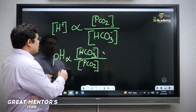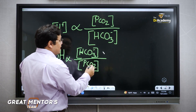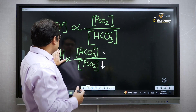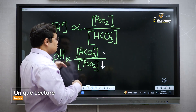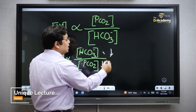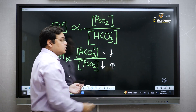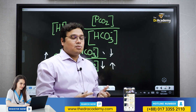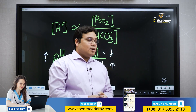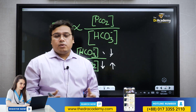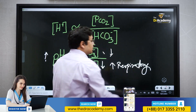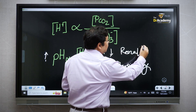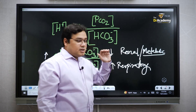In short, pH is proportionate to bicarbonate levels — whenever bicarbonate increases, pH increases; and whenever partial CO2 decreases, pH increases. To make pH go down, either bicarbonate must decrease or partial CO2 must increase. Two systems regulate blood pH: one is respiratory, which governs partial CO2, and the other is the kidney, which maintains bicarbonate levels — we can call this the metabolic component.